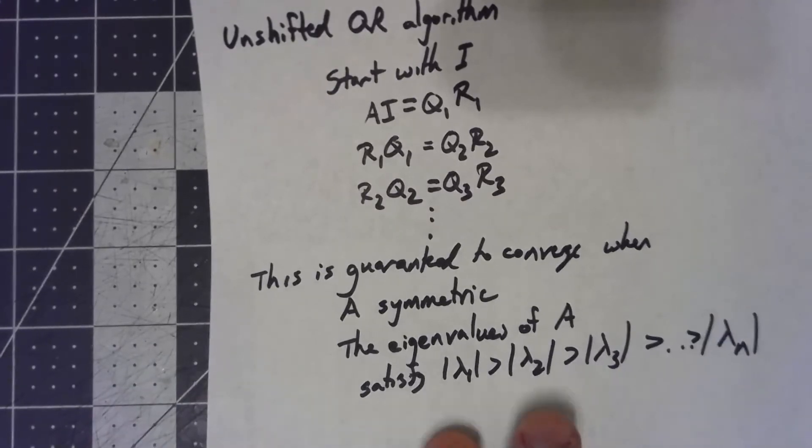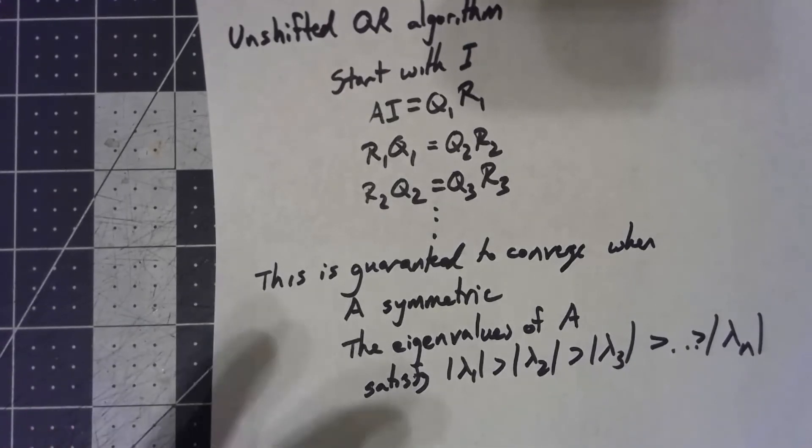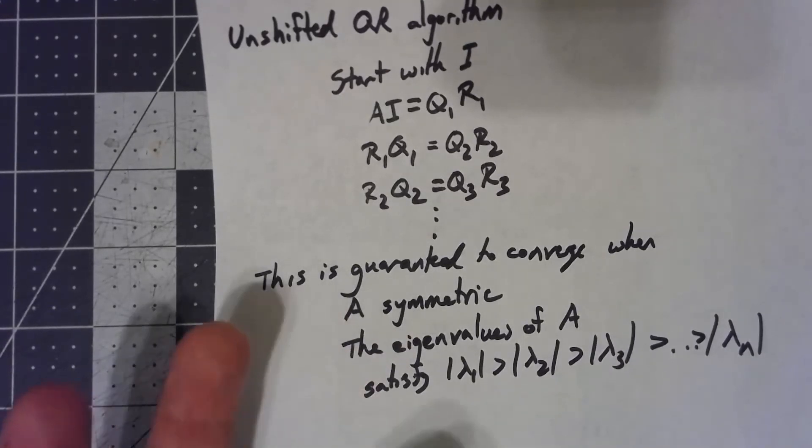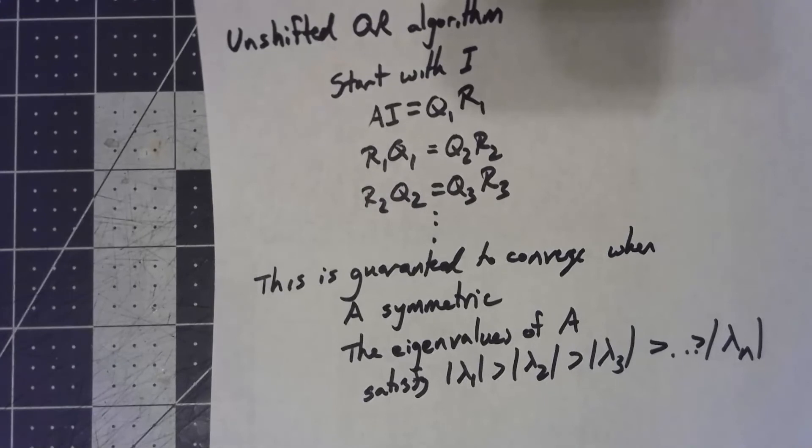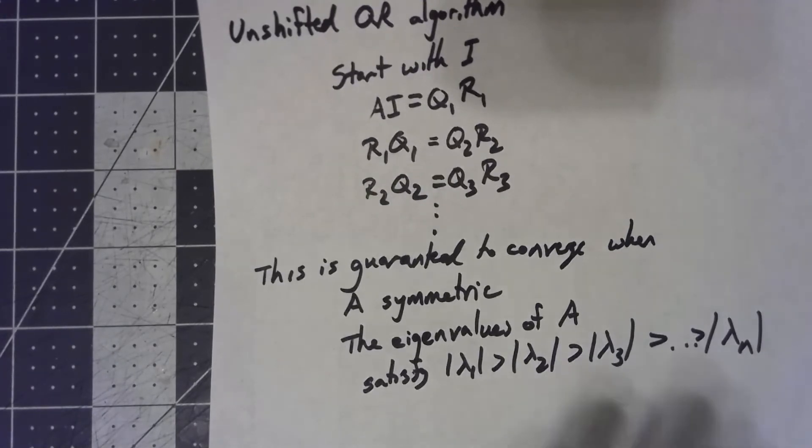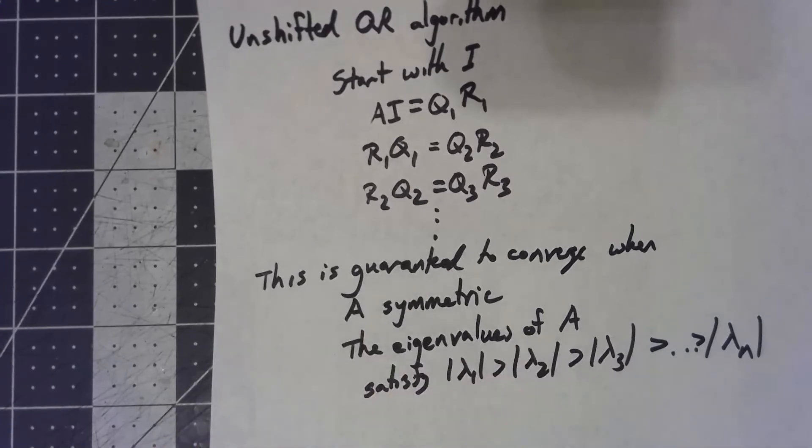Again, it's a fairly rigorous condition here. It doesn't happen all the time, there are certainly examples where it doesn't, but it's not completely terrible. And A being symmetric, that's again a little bit of an issue, though there are some ways around that as well.